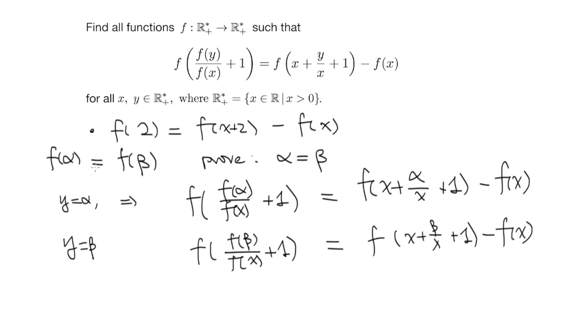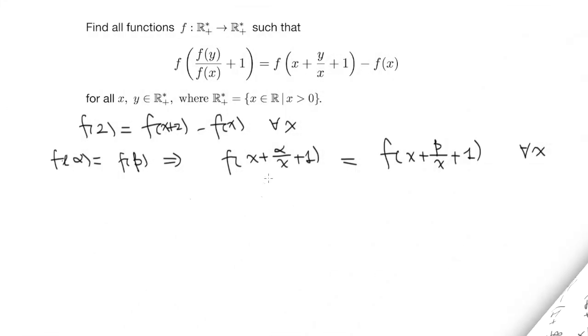And since f(alpha) equals to f(beta), this means that these two terms are equal to each other. And necessarily we have that these two terms are equal, which means that for any x, f of (x plus alpha) over (x plus 1) equals to f of (x plus beta) over (x plus 1). So now we get these two equations.